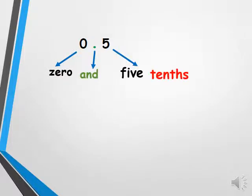Now look at this number: 0.5. We can't read it as zero and five tenths because zero has no value. So we read it as five tenths.